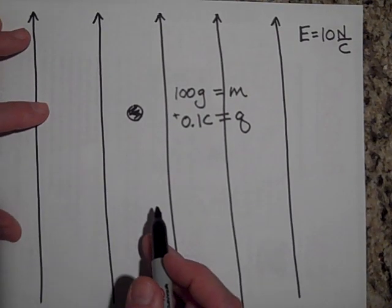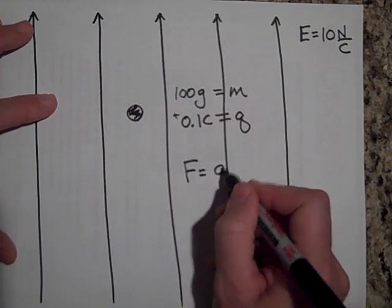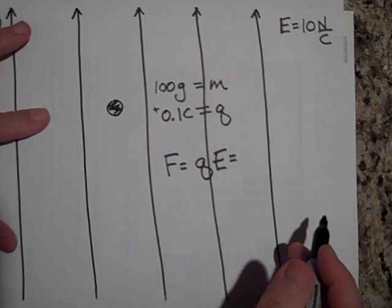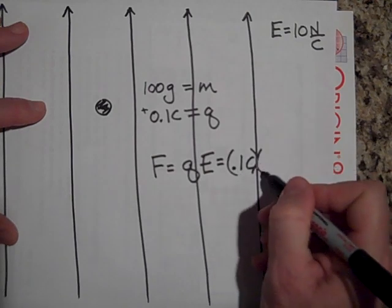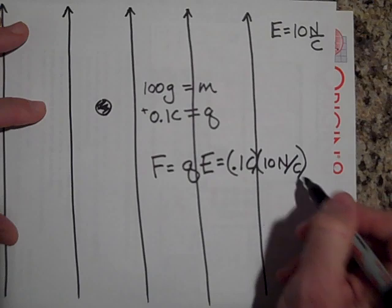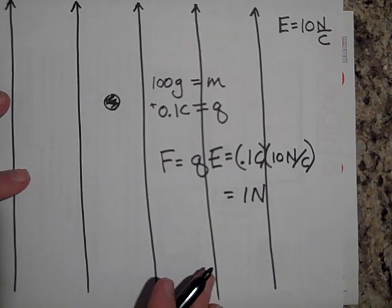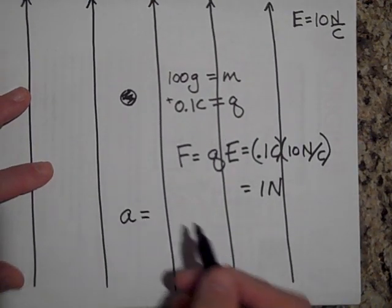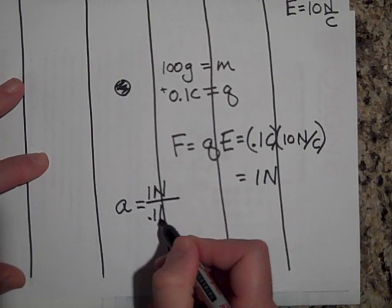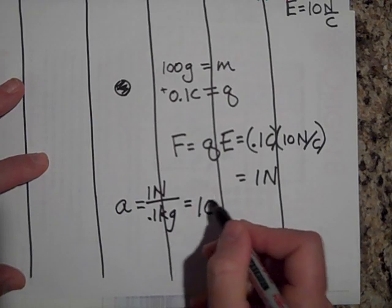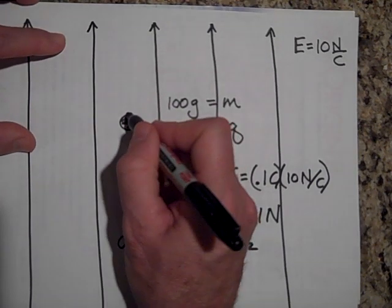Okay, the force on this charge is going to be Q times E. So that's going to be the Q is 0.1 coulombs and the E is 10 newtons per coulomb. So the force is 1 newton. So the acceleration of this charge will be 1 newton divided by its mass, 0.1 kilograms. So that will be 10 meters per second squared. And which way will it accelerate? That way.